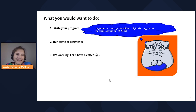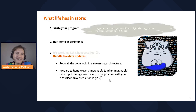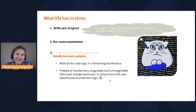That's the optimistic version. Things start to get difficult if you want to go to the streaming world and start handling live data updates. This means essentially redoing all the code logic in a streaming architecture, which means preparing to handle every imaginable and unimaginable data update scenario — all in conjunction with the classification and prediction logic designed previously. This is not an ideal place to be.